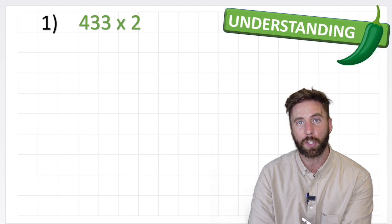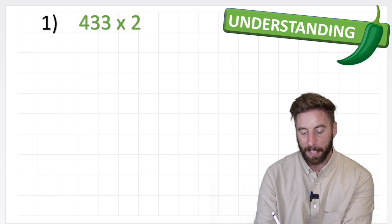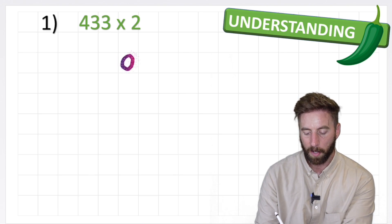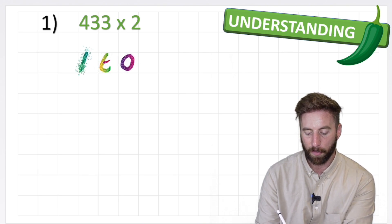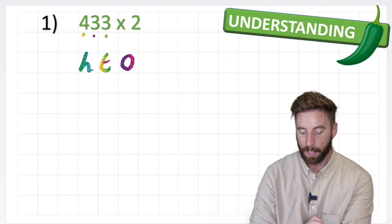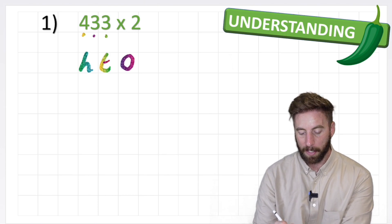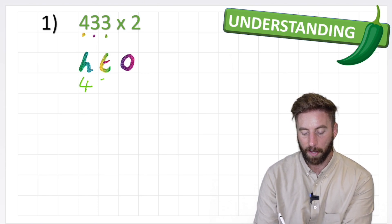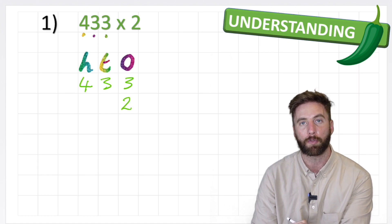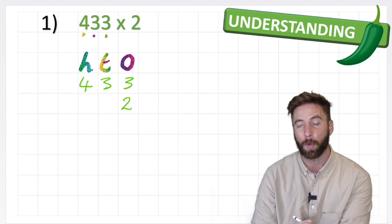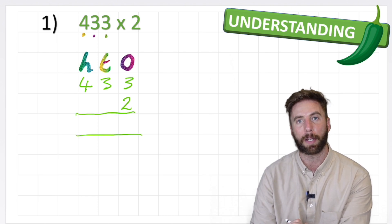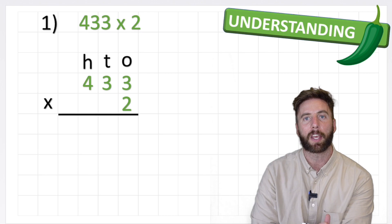So how are we going to lay out our question? Well, we talked about setting up our place value chart and putting our labels. So we're going to use a 1, a 10, and a 100 for this question because we have a 1, 10, and 100 in 433. Now I'm ready to put my numbers in place. I'm going to have 433 on the top and my 2 on the bottom row, but in the correct column which in this case is a 1. Put my equals line and I'm ready to begin.